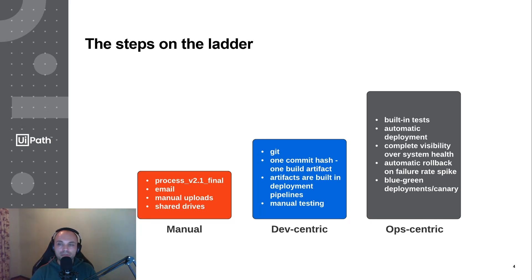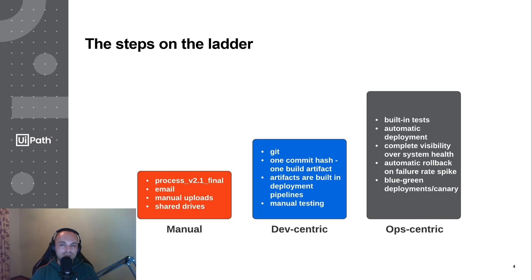You send the package via email, attach some naming convention to it like version 1.0, and send it to the QA engineer who publishes it to the UiPath orchestrator. But there are problems — we need iterations and we don't want to change the version again, so maybe we say underscore final, then underscore final underscore don't touch, final final, and so on. We end up with a lot of emails and no traceability. Maybe there is a manual testing plan, but if that regression testing takes three hours you'd say 'I just changed this one file, don't test everything.' The manual uploads and inherent errors really don't make this scalable.